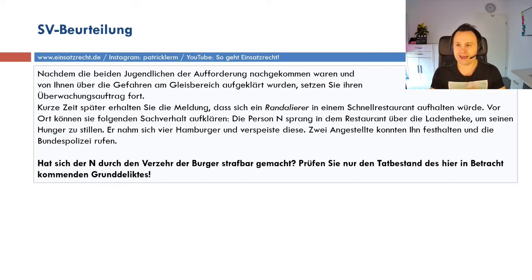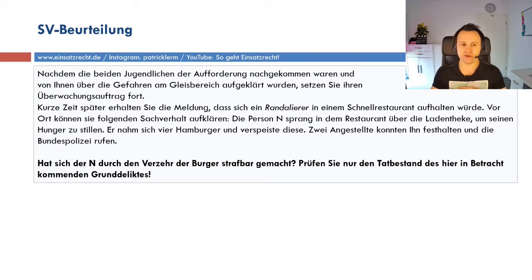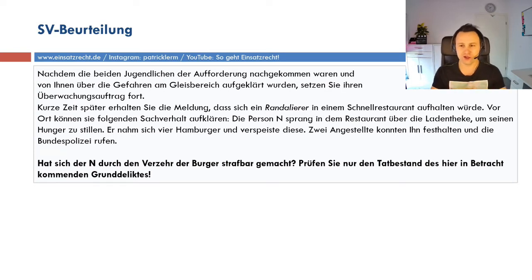Es soll wohl einen Randalierer geben – in Anführungsstrichen. Wir wissen nicht genau, was passiert ist. Ein Randalierer soll sich in einem Schnellrestaurant im Bahnhof aufhalten. Der Sachverhalt klärt sich: Person N sprang im Restaurant über die Ladentheke, um seinen Hunger zu stillen. Er nahm vier Hamburger, aß diese, und zwei Angestellte hielten die Person fest und riefen die Bundespolizei.